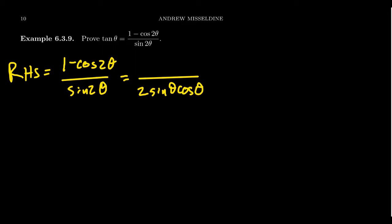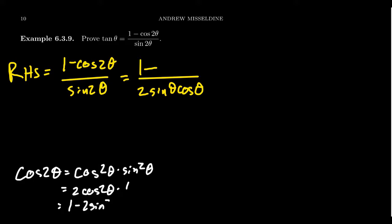And so for the top, you're going to get 1 minus cosine of 2 theta. What are your options? Remember, this is both a blessing and a curse when it comes to double angle cosine. You have cosine squared theta minus sine squared theta. You get 2 cosine squared theta minus 1. And you get 1 minus 2 sine squared theta.